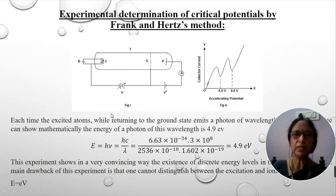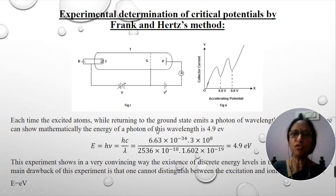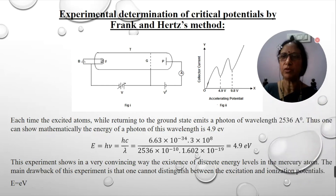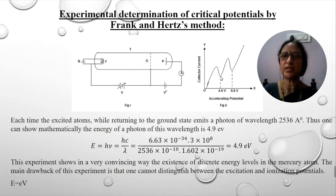From this experiment it is clear that at every excitation, dips occur. When the excited atoms return to the ground state, they emit a photon of the same energy they absorbed. From the calculation, while returning to the ground state they emit a photon of wavelength 2536 angstroms. Substituting this value in the energy equation gives 4.9 electron volts. This is the ground state energy of mercury, and thereby the first excitation takes place.